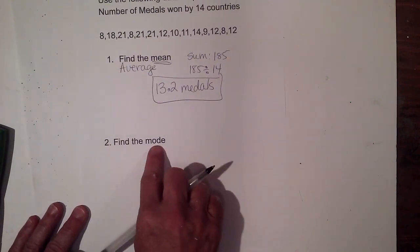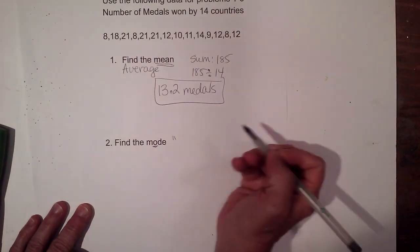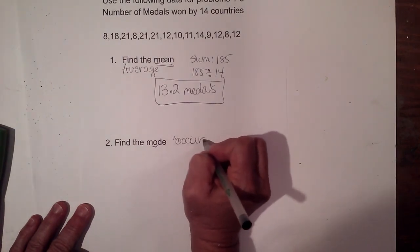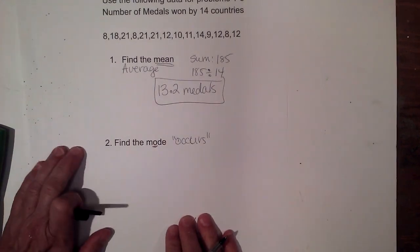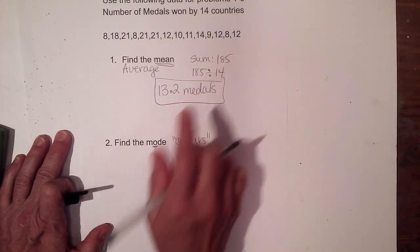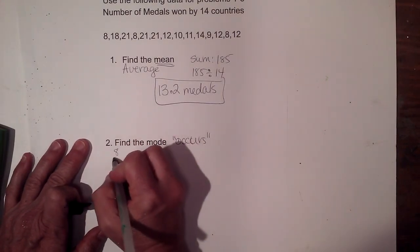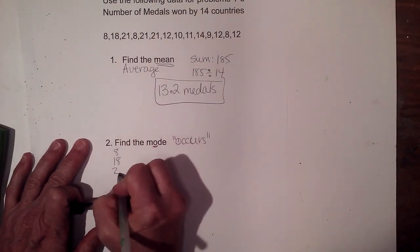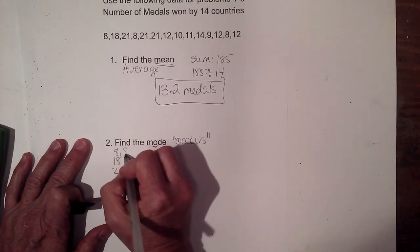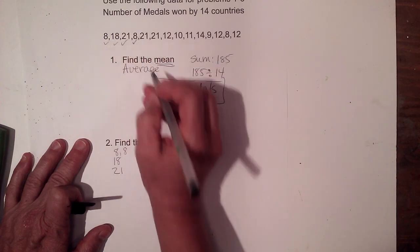Now let's look for the mode. What does mode mean? Mode means — and I always remember this because it has an O in it — it occurs the most. So which number occurs the most in our data set? Let's make a little chart. We have an 8, an 18, a 21, a second 8 — I'm going to list the 8s up here and group these together.